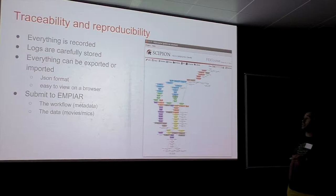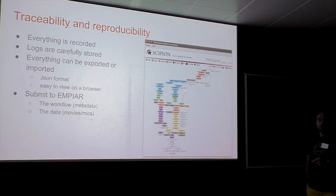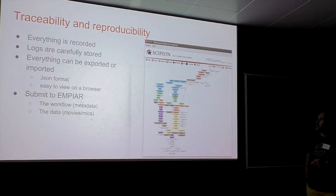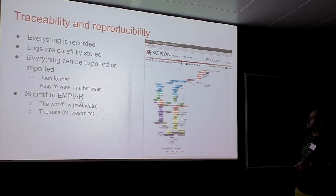Moving on to traceability and reproducibility: actual image processing done within Scipio looks like this — you start with something simple like movie alignment and CTF estimation, and then you start to branch out. You try different options and parameters; many of them don't work and you may delete them, so this view is probably a clean one. You can establish labels and color-code your workflow nodes — for example, 2D classification nodes in one color, 3D classification in another.